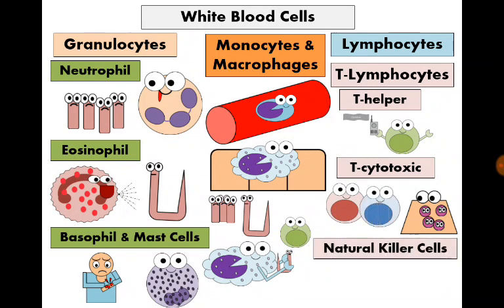The third T-cell type is the natural killer cell. Natural killer cells also kill abnormal cells; however, natural killer cells kill any abnormal cell — they are not specific to any particular cell, so they are part of innate immunity and can act early in disease before acquired immunity develops. Of course, T-cytotoxic cells are more powerful and efficient than natural killer cells.